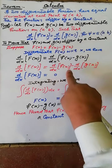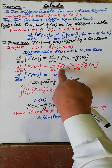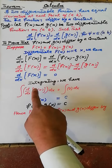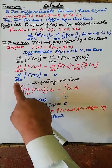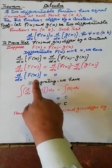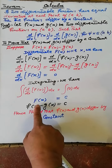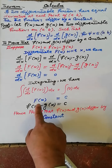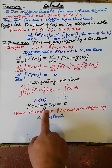Substituting, since the derivative of f(x) equals the derivative of g(x), we get F'(x) = 0. Now integrating, applying the integration operator on both sides of the equation, we have F(x) = c, where F(x) equals f(x) minus g(x).